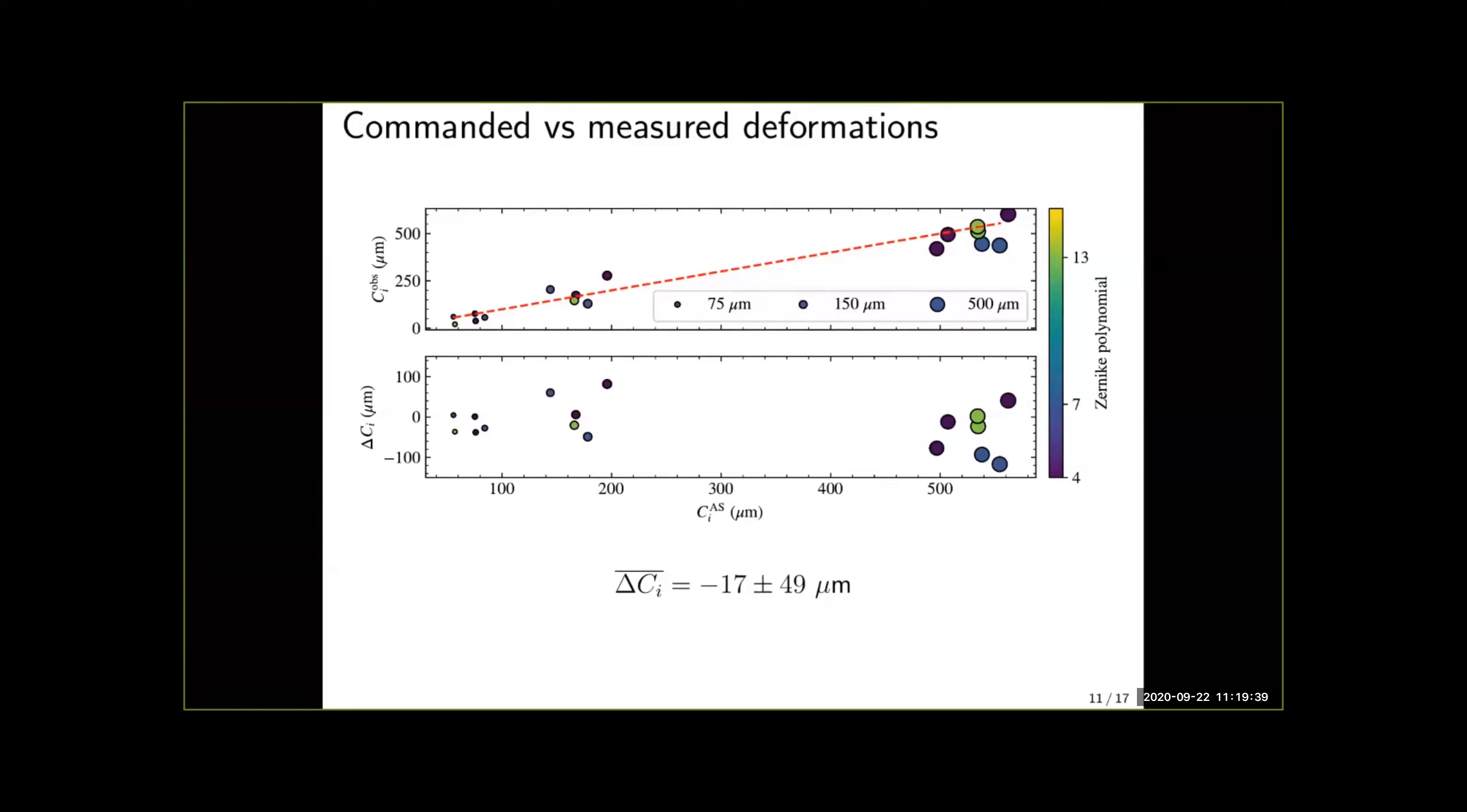On the bottom panel what we're seeing is the difference between the measured deformation and the input deformation. And again we see that the points are roughly clustered around zero with a mean value of minus 17 microns plus minus 50 microns.